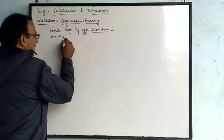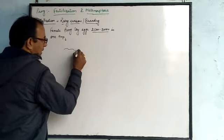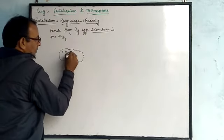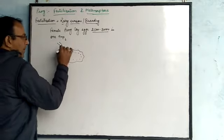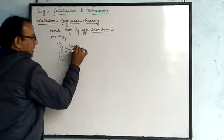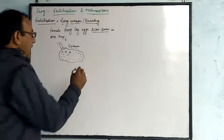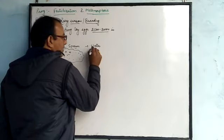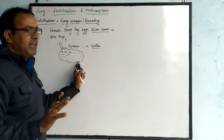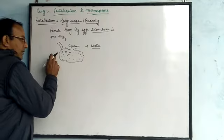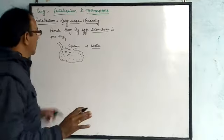At the same time, the female lays eggs and the male ejaculates sperm. Fertilization takes place in water — as we have already discussed, frogs are amphibians and water is required for fertilization. As the female lays eggs, the male ejaculates sperm and the sperm fertilizes the eggs. This is called fertilization.